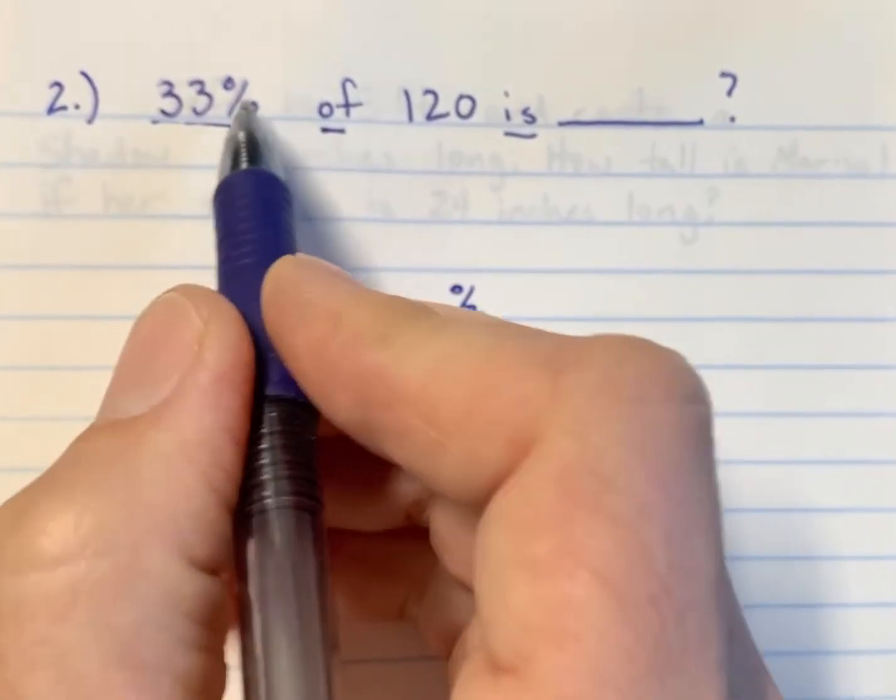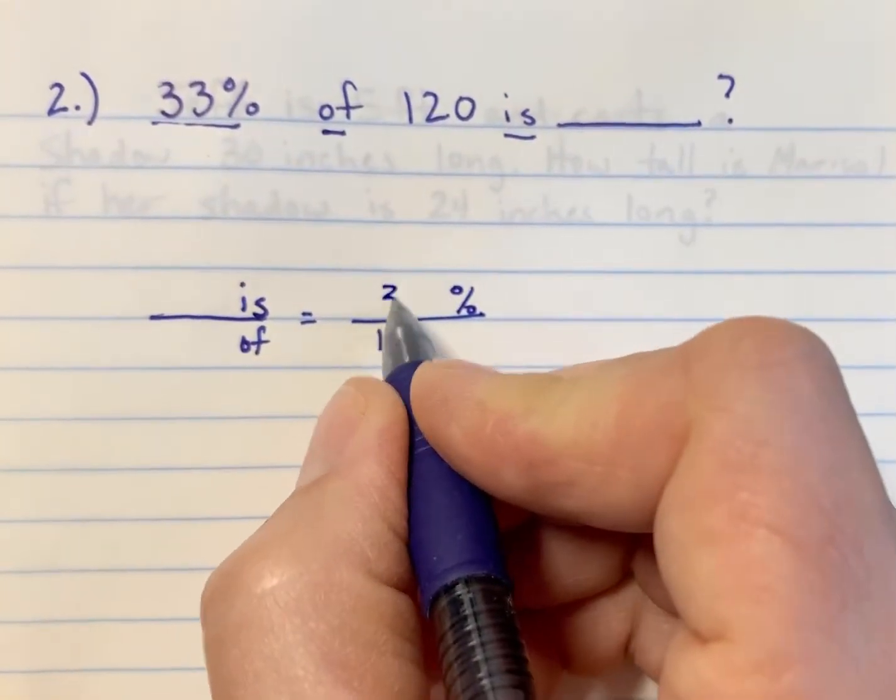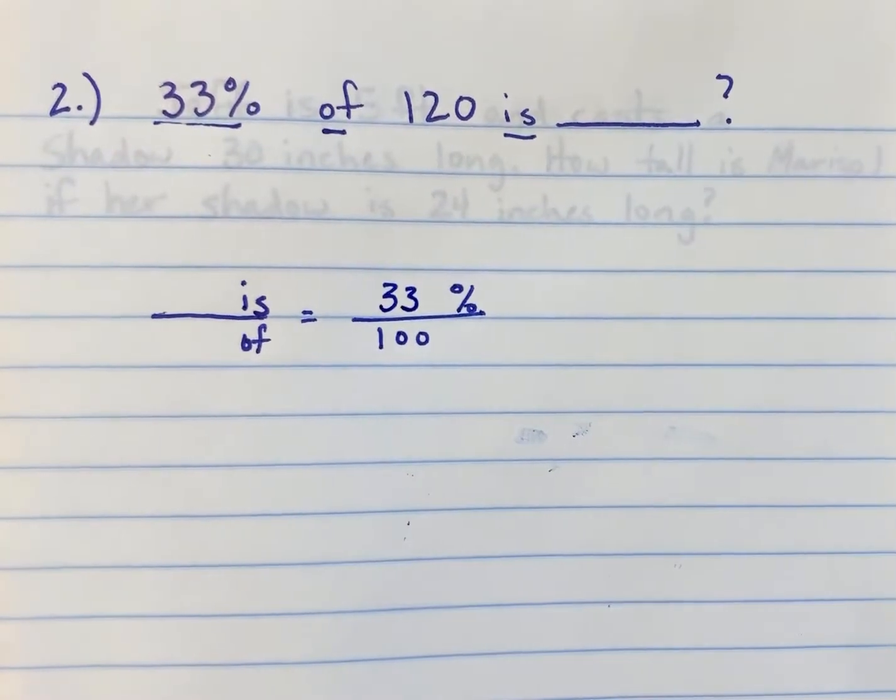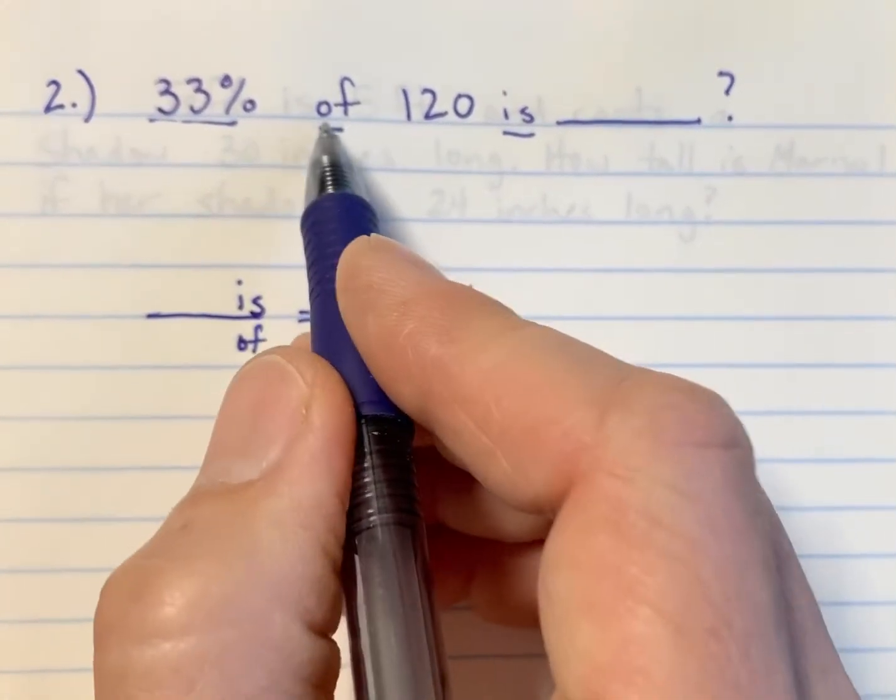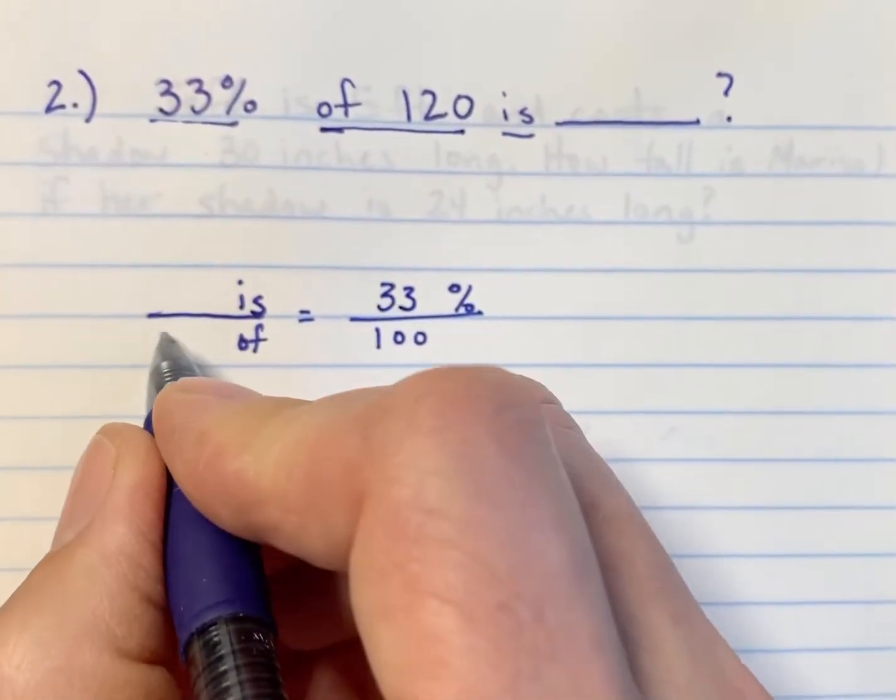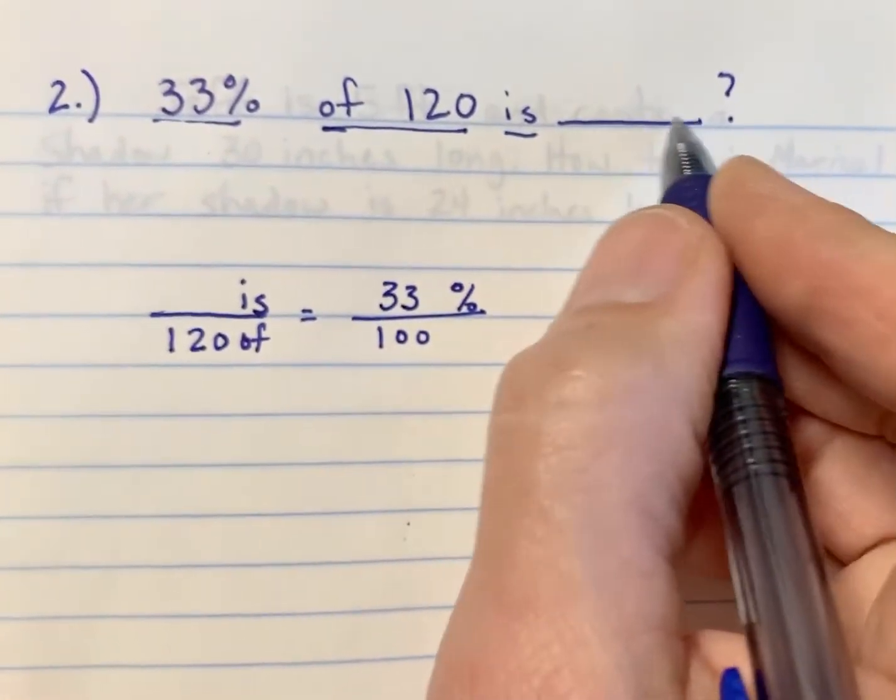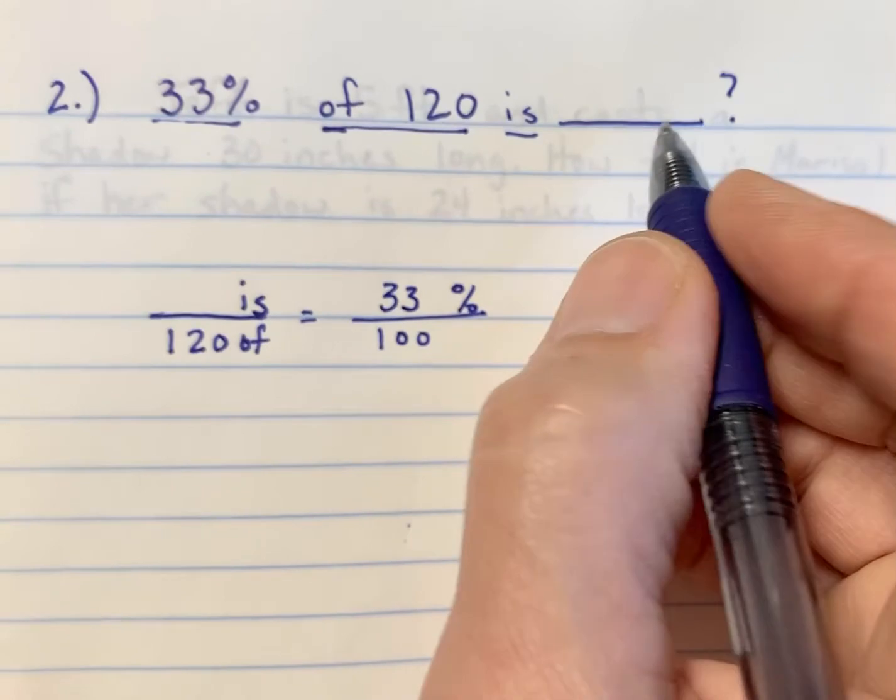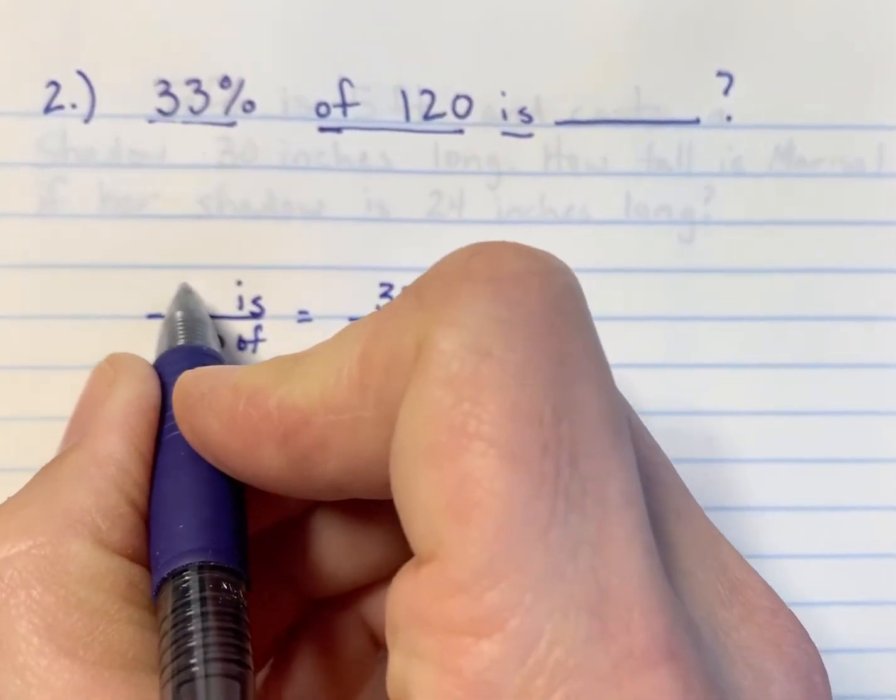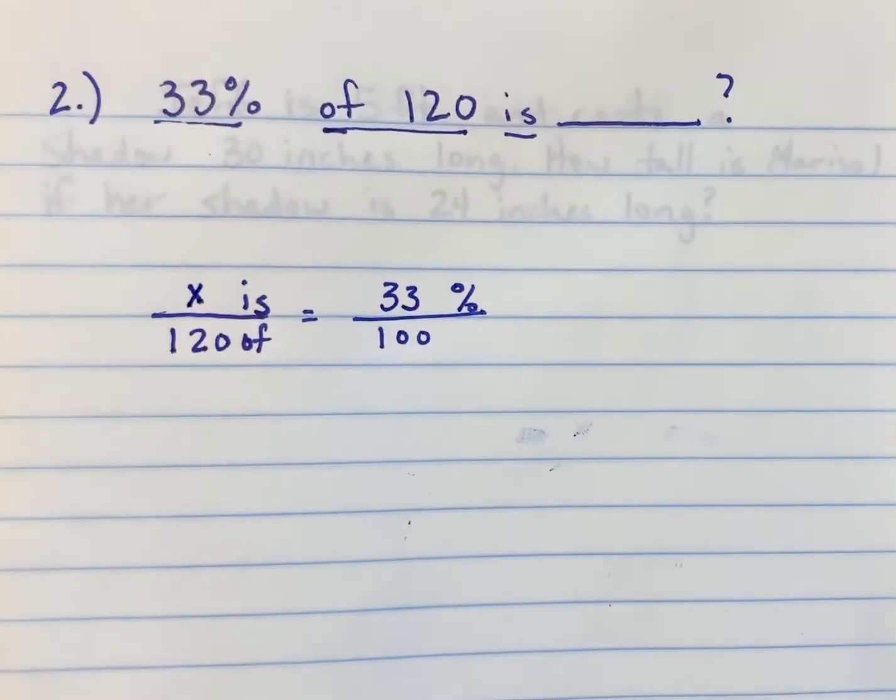Now, 33%, I see that it has a percent sign, so I'm going to put it in the percent part of this proportion. Of 120 tells me that 120 is going to go with the of. Is something, this is what we don't know, and in math, as you recall, we use a variable when we don't know what a number is equal to.